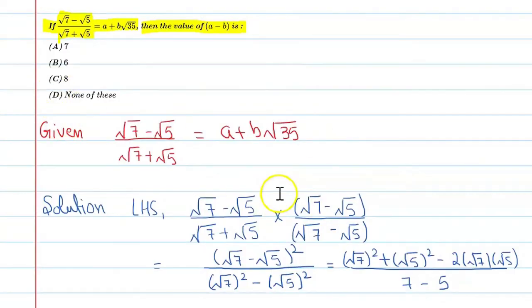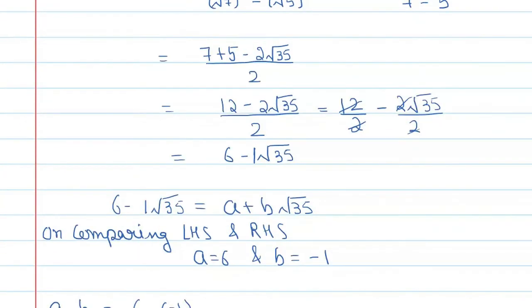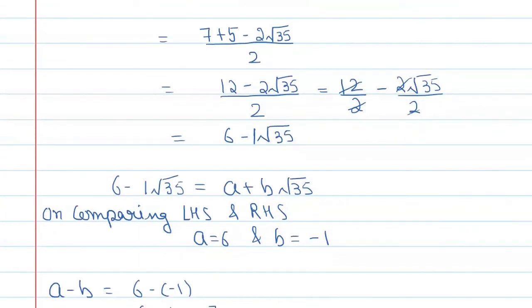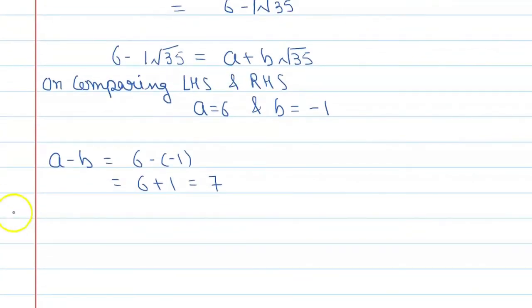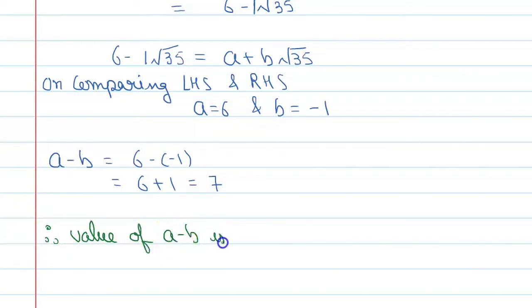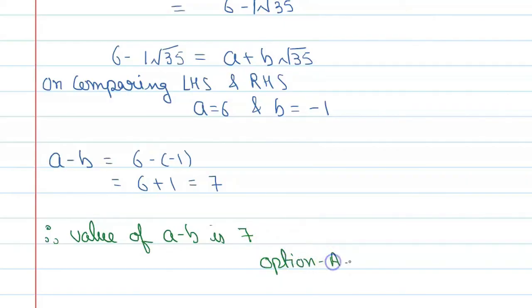The correct option is A. Therefore, the value of a minus b is 7 and the correct option is A.